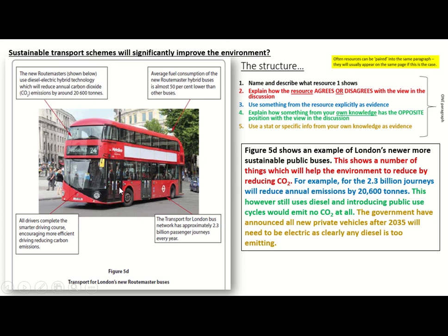Now I've got to show my own knowledge to give the other side. Even though these buses are great, they still use diesel — diesel hybrid or diesel-electric hybrid — so they're still going to emit CO2, whereas bicycles don't emit CO2 at all. So I can say: this however still uses diesel, and introducing public use bicycles would emit no CO2 at all, making it more significant. I also know that after 2035 any new private vehicles will have to be electric, showing the government clearly thinks diesel still emits too much. So the fact that these are diesel suggests they're not significantly improving the environment — just doing it a little bit.